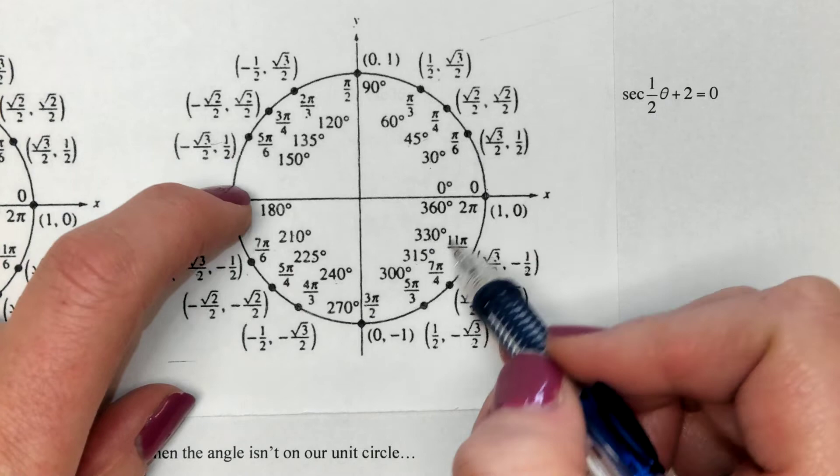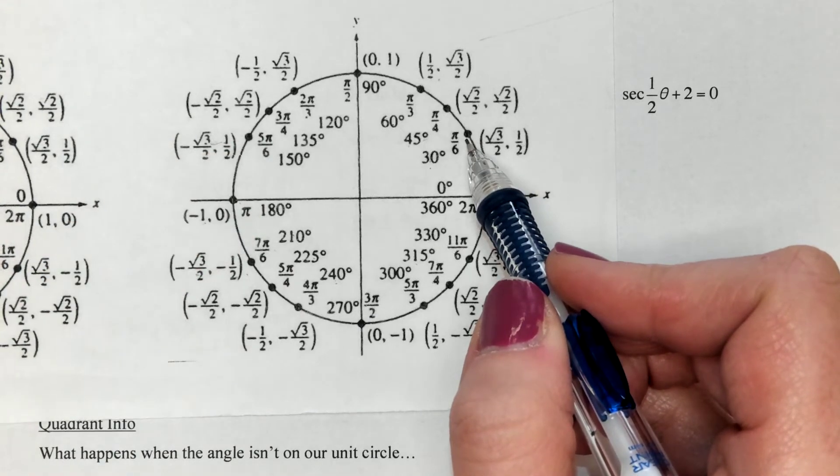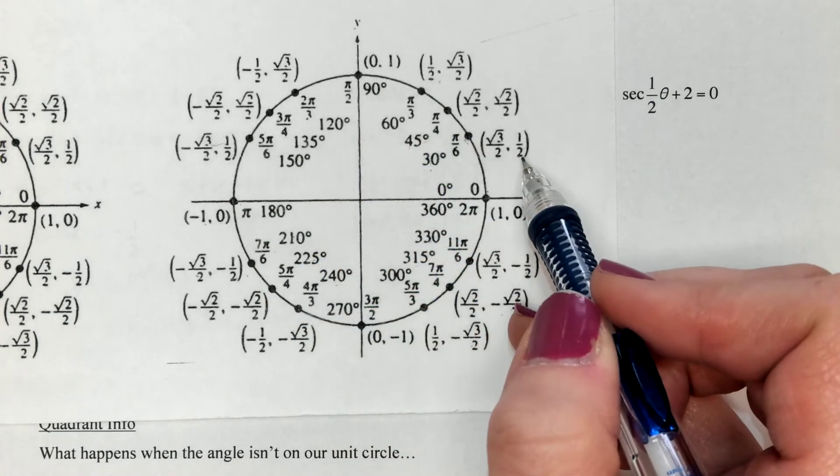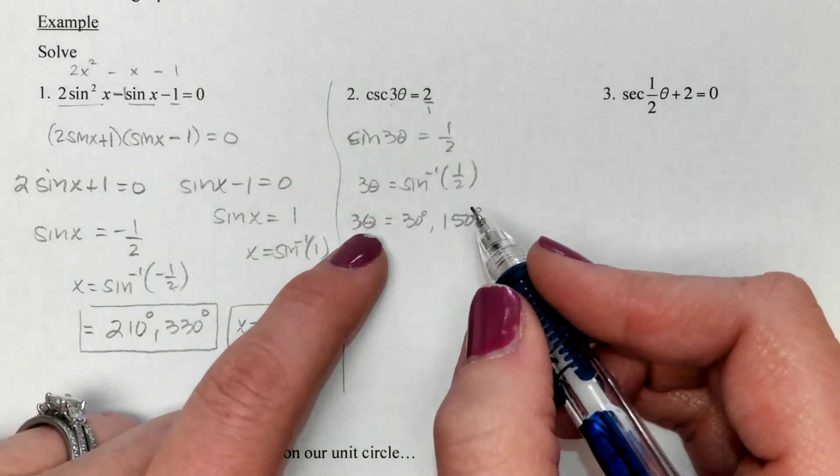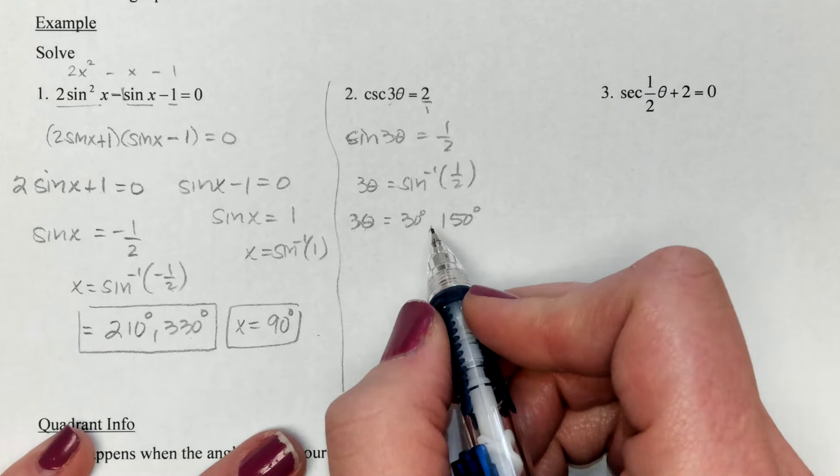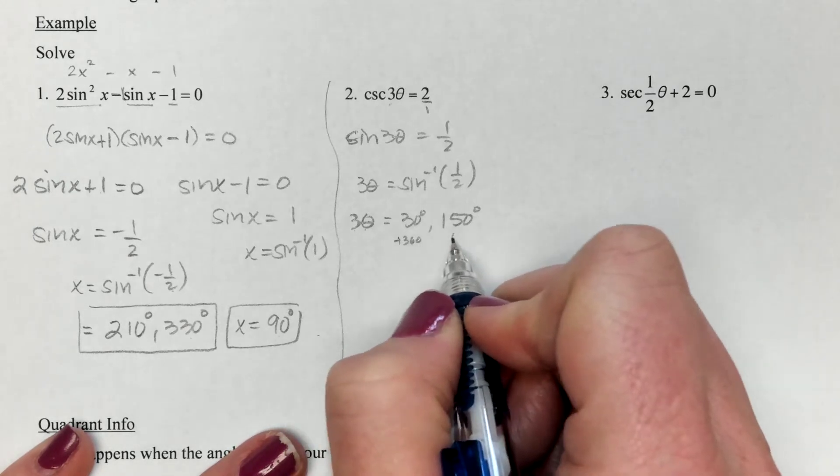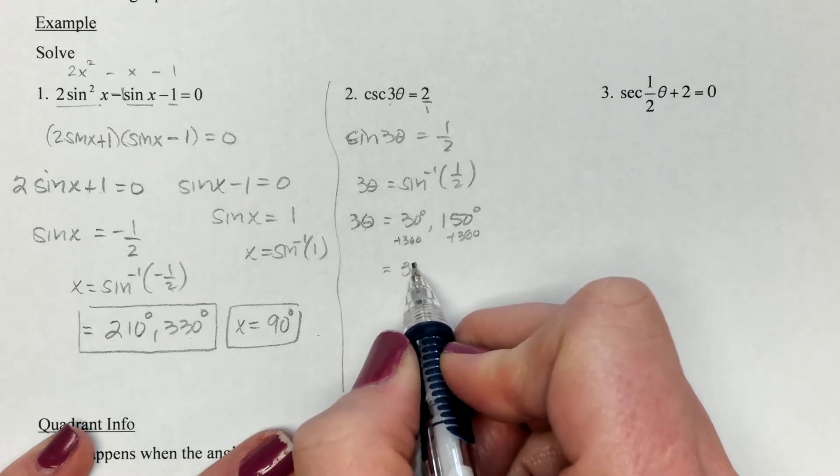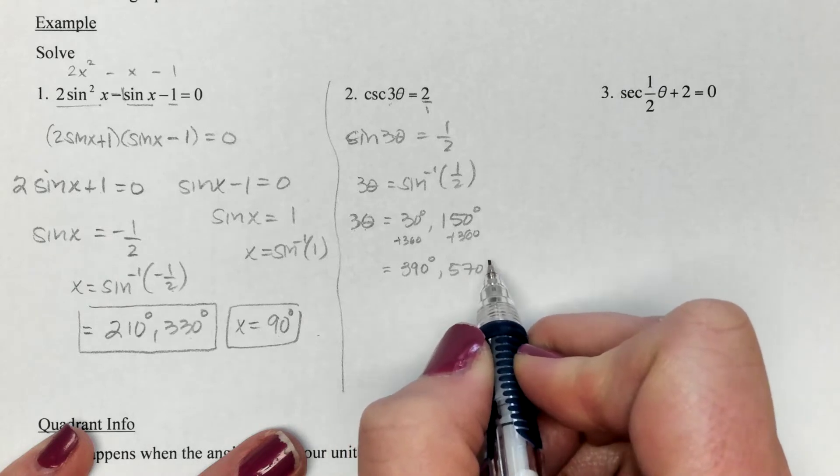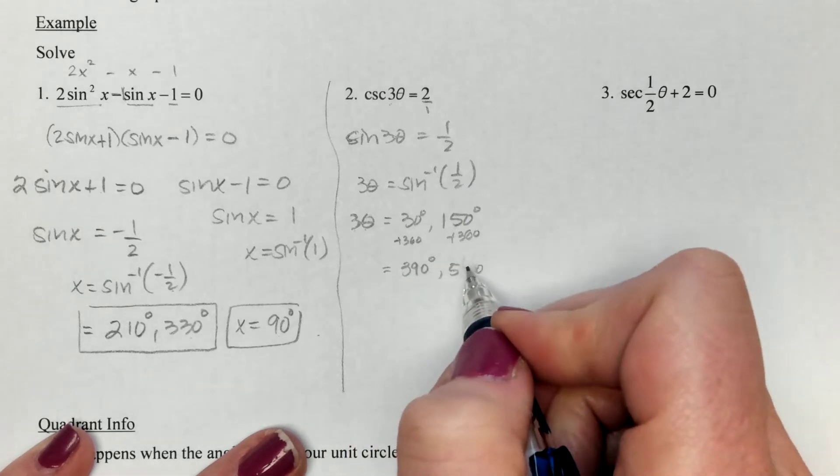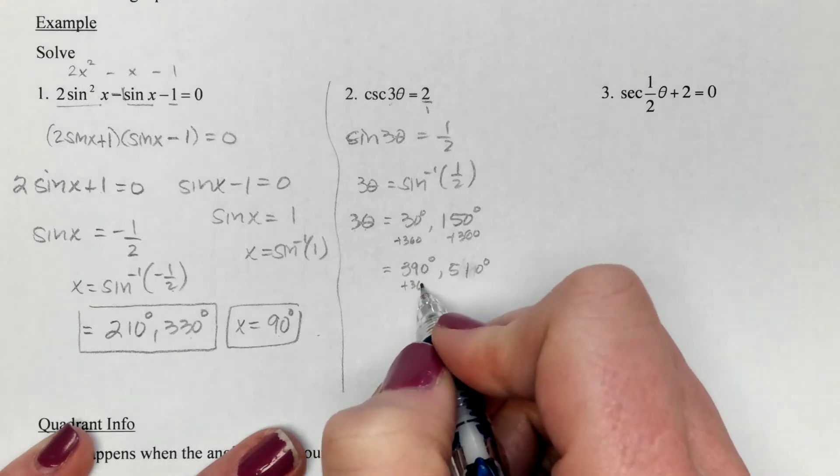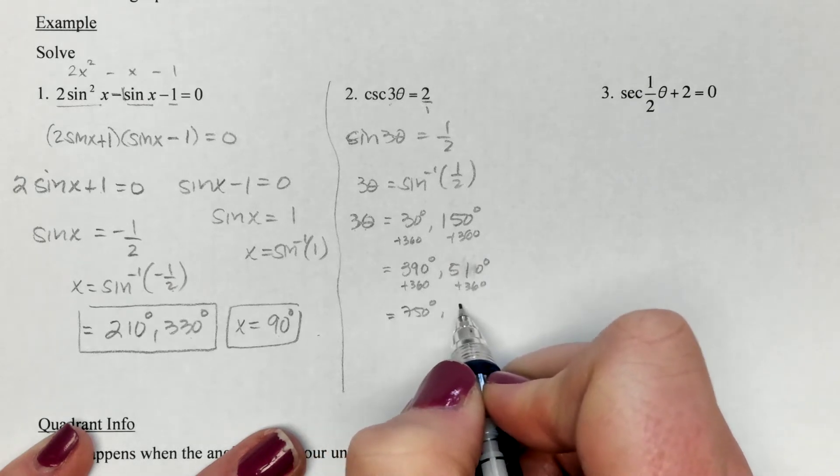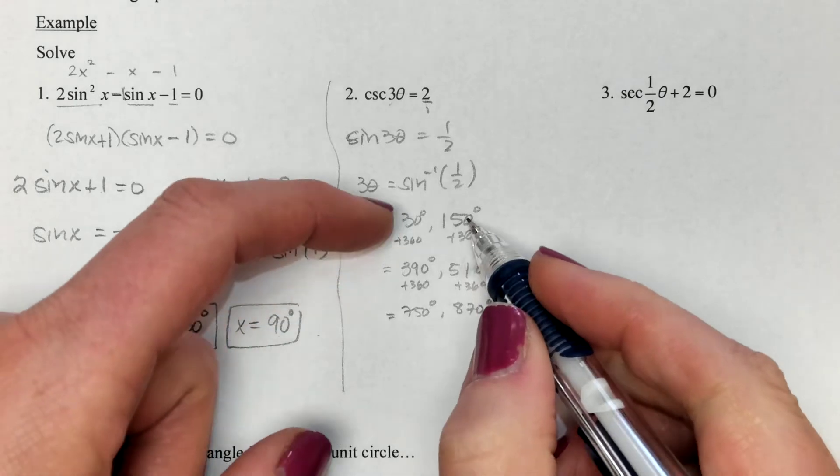If I go around the circle again, I still land here and here. The only difference is the angle is slightly bigger. Instead of being 30 degrees, I would be 390 degrees. We're looking to go around the circle three times. So we take the two answers we got on our circle and add 360. We're going to go around the circle again, which gives us 390 and 510. Then we do it again, so this will be 750 and 870.